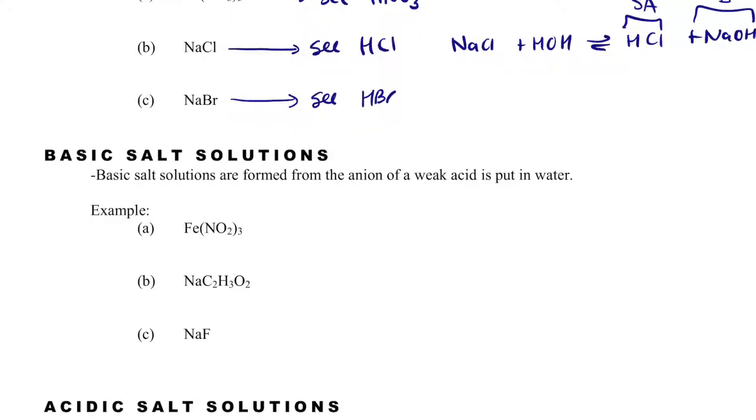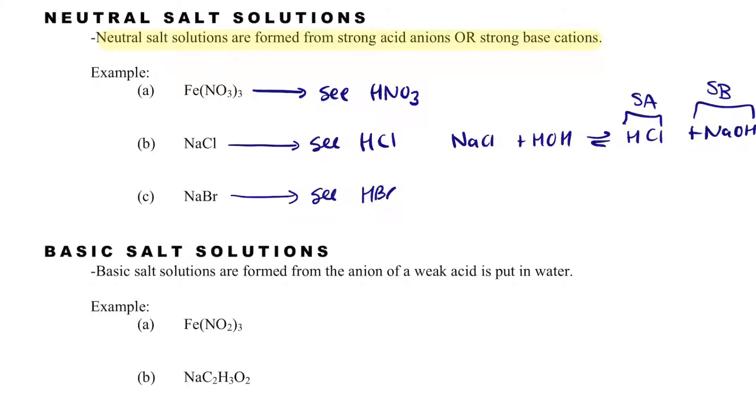Now, to figure out something that does not come from a strong acid, what I know is I see HNO2 here, which is a weak acid, and so I know that this is going to be slightly basic, but let me prove why.